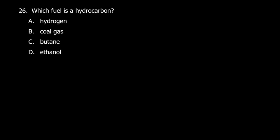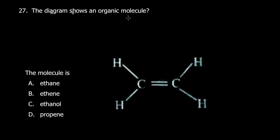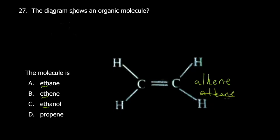Question 27: identify the organic molecule shown. Count the carbon atoms in the center — there are two, so we use the prefix 'eth-'. There's a double bond shown, which means it's an alkene (a single bond would make it an alkane). Alkenes use the '-ene' ending, so the molecule is ethene. If it were a single bond it would be ethane.